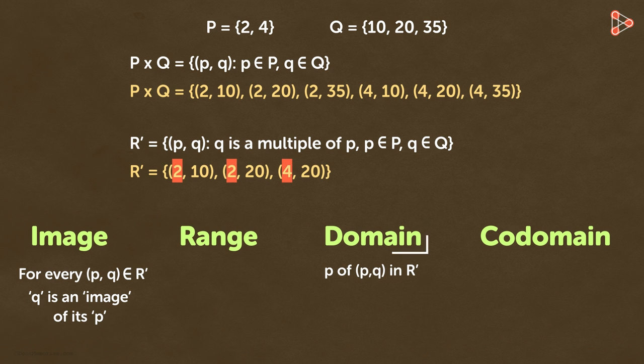The set of p of all ordered pairs (p,q) in set R' is called the domain. Or we can say that the set of the first elements of all the ordered pairs in set R' is called the domain. So the domain contains the elements 2 and 4.